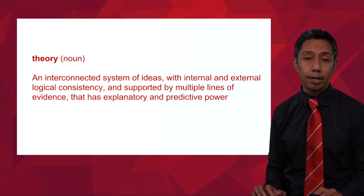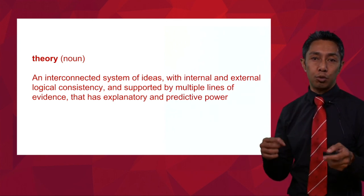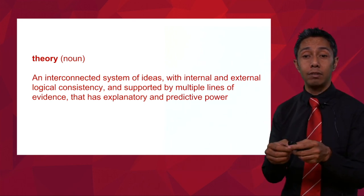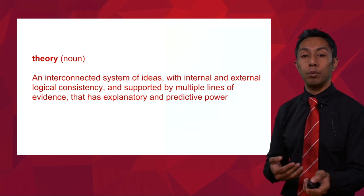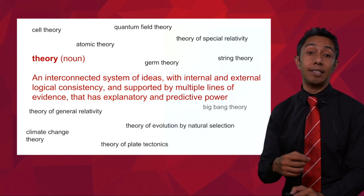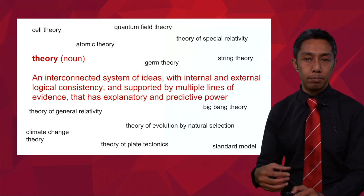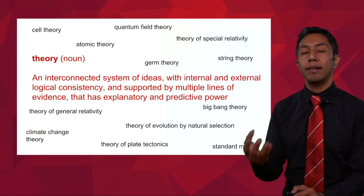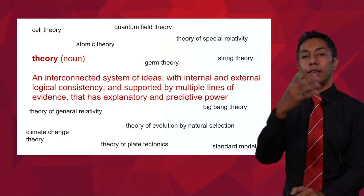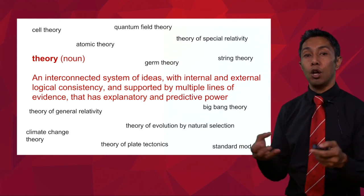More important than laws are hypotheses and theories. The pinnacle of scientific knowledge is the theory. As defined earlier, a theory is an interconnected system of ideas with internal and external logical consistency and supported by multiple lines of evidence. For example, the cell theory — that all living things are made up of cells — the atomic theory — that all things are made up of atoms or particles — or the germ theory — that disease is caused by pathogens. These are the actual pinnacle within science because we're trying to build knowledge over time, and that's one of the primary reasons we do science.